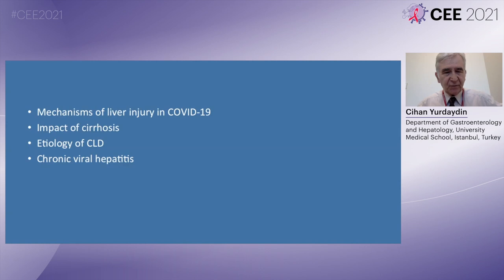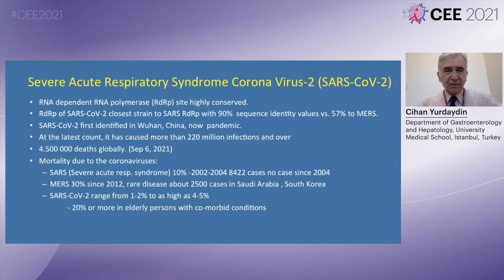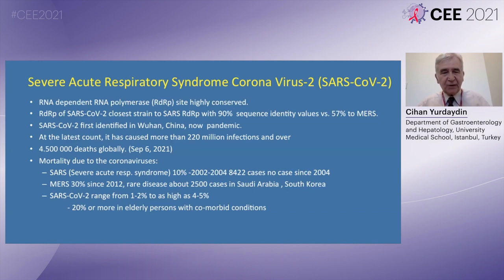Similarly, I will cover the etiology of chronic liver disease on the outcome of SARS-CoV-2 infection and finish with chronic viral hepatitis. The severe acute respiratory syndrome coronavirus 2, or SARS-CoV-2 infection, has caused more than 220 million infections and over 4.5 million deaths as of September 2021. We have learned early on that comorbidities, including chronic liver disease, contribute to the severity and mortality of COVID-19 disease.